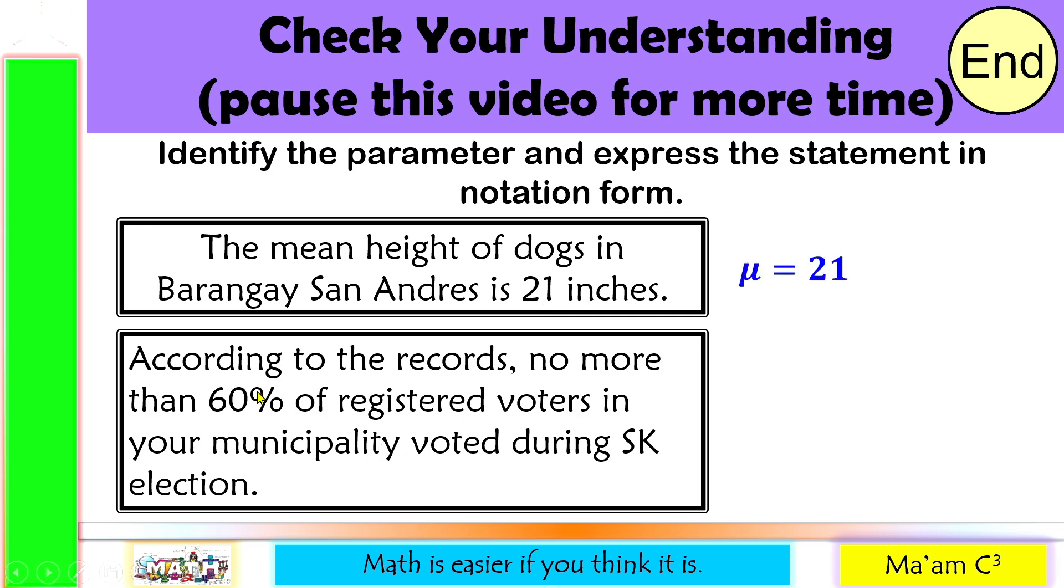Number two, according to the records, no more than 60% of registered voters in your municipality voted during SK election. We have here a proportion. So this is P, and it says here no more than, so it could be less than or equal to 0.6. Gets?